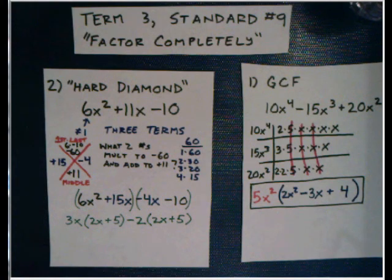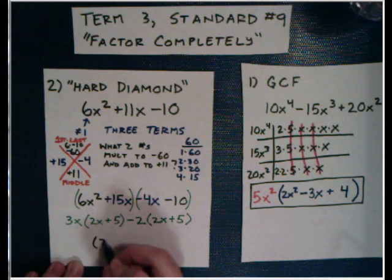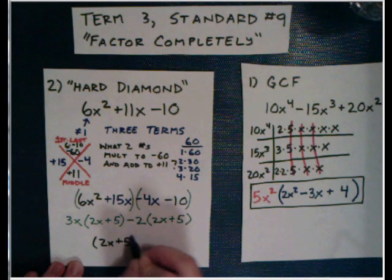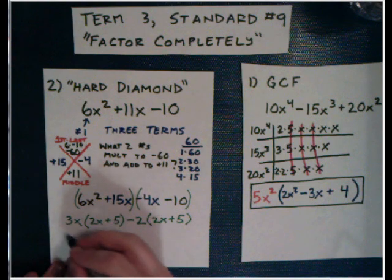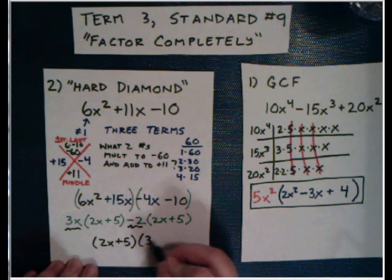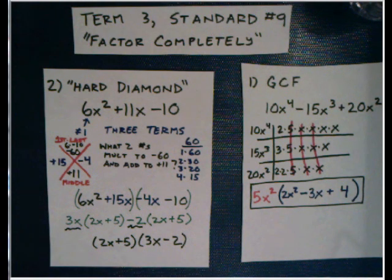Now we just need to actually write it out in the correct form as something times something, or stuff times stuff. The first factor, it's written twice. So that's 2x + 5. My second factor will be right here and here. So 3x - 2. There we go. (2x + 5)(3x - 2). That would be a hard diamond factoring problem done to perfection.